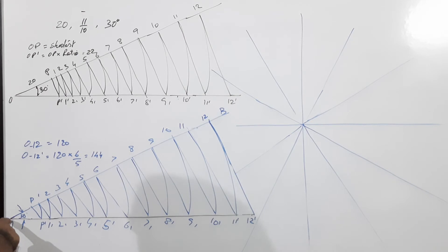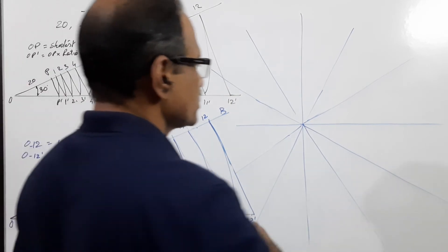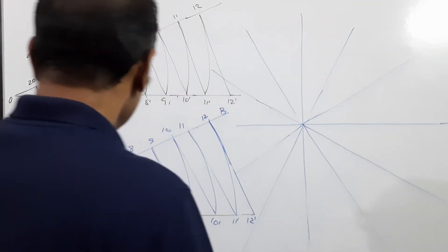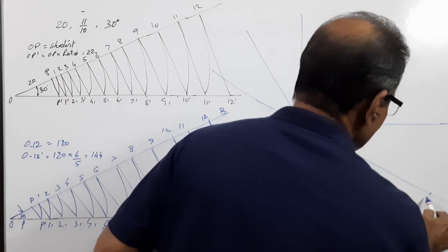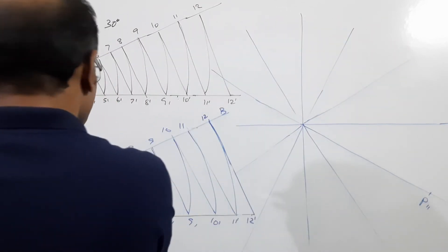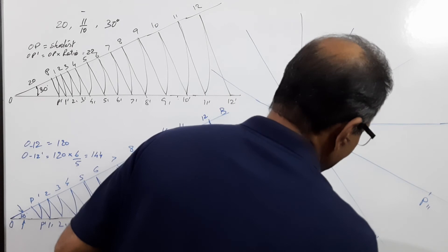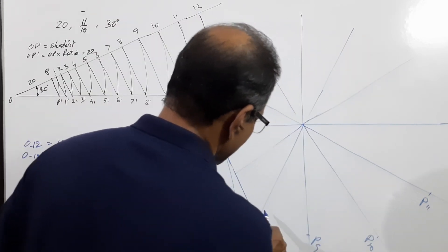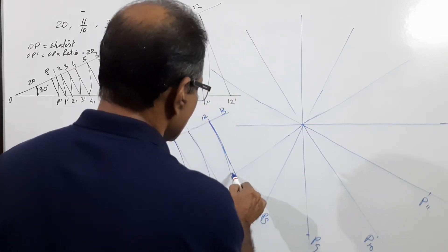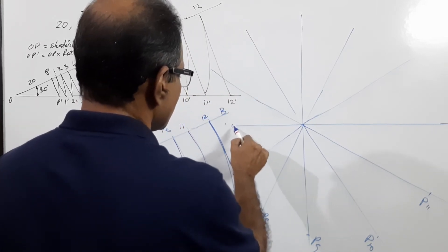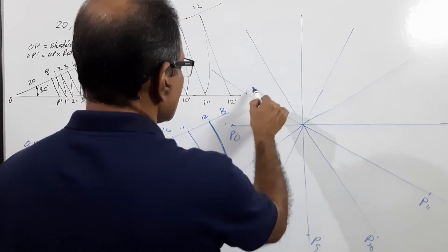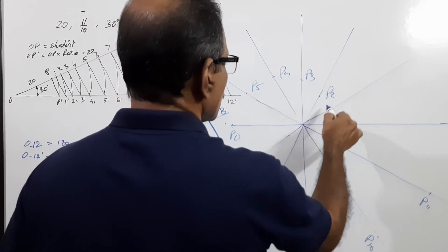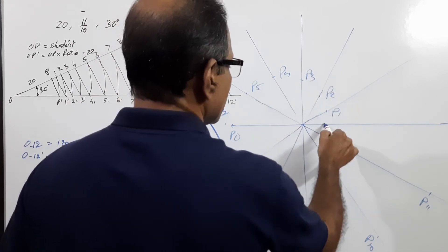Take O12 and mark on this radial line, you get P12. Take O11, mark on this, you get P11. Take O10, mark P10. Continue with P9, P8, P7, P6, P5, P4, P3, P2, P1, and P.